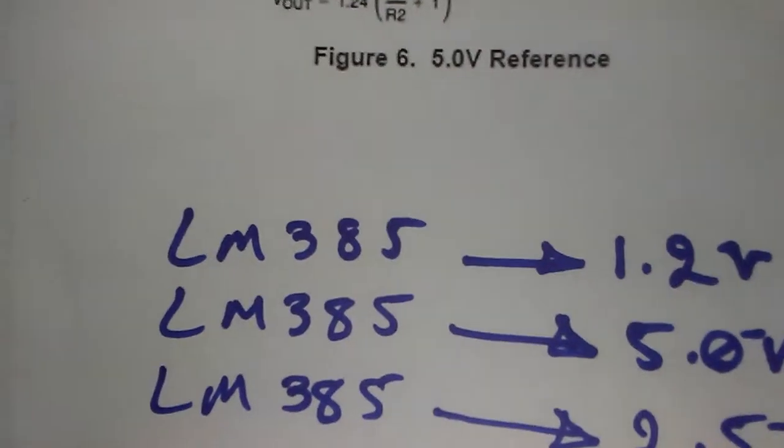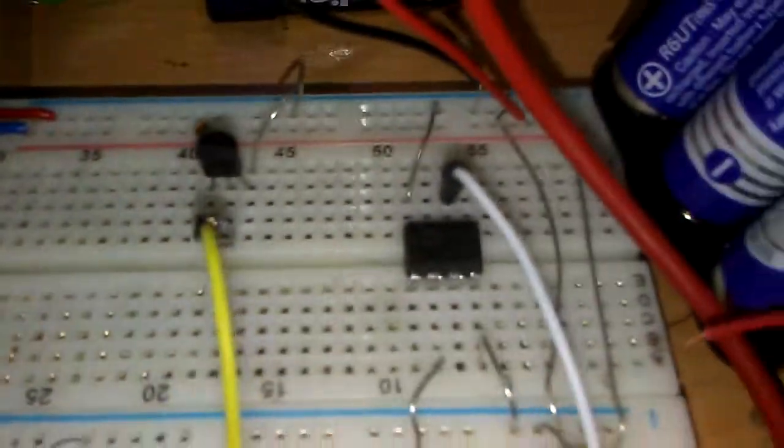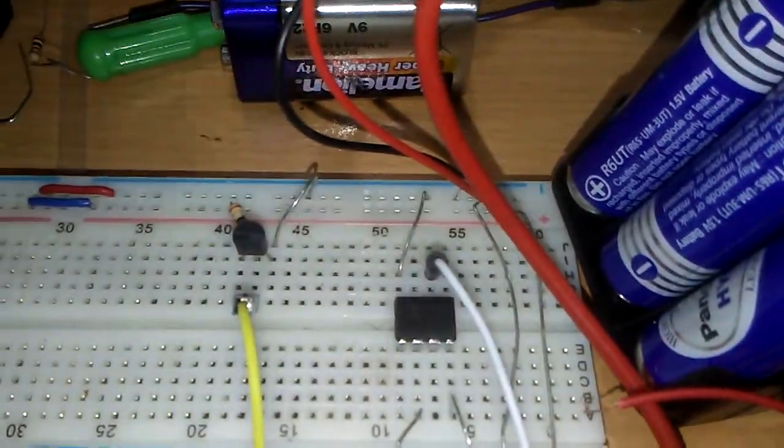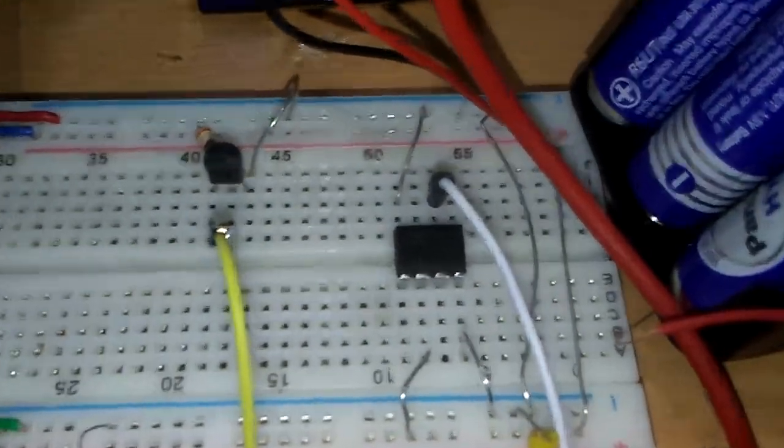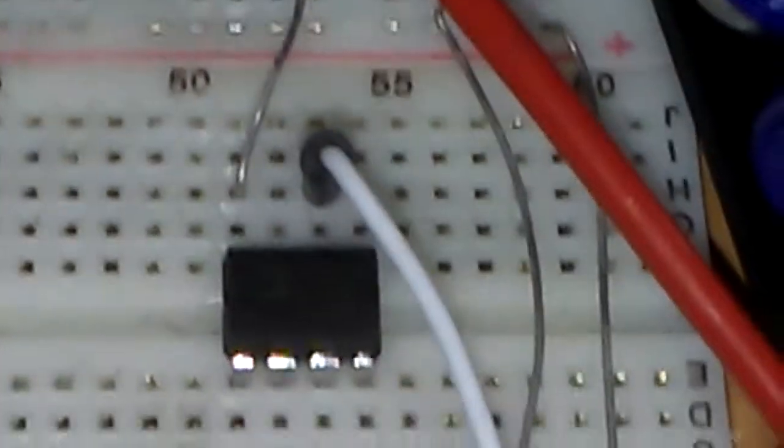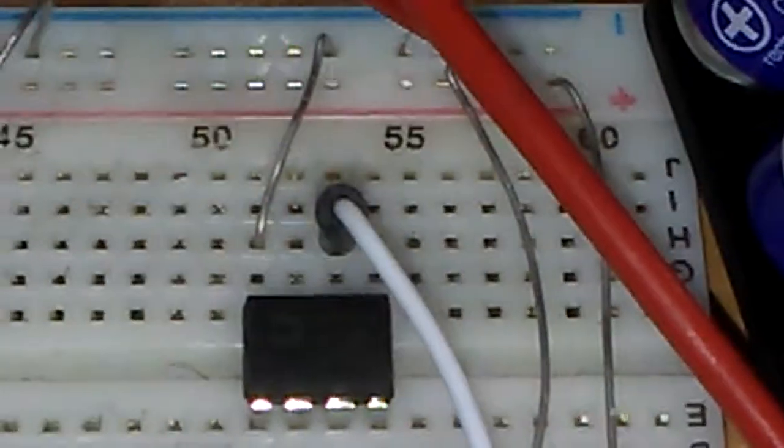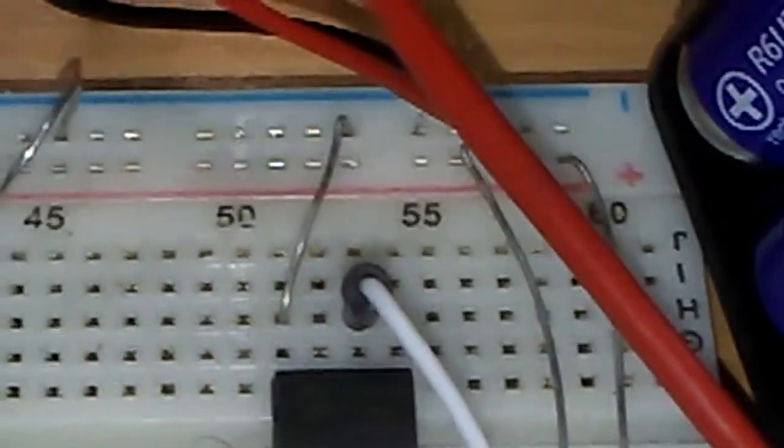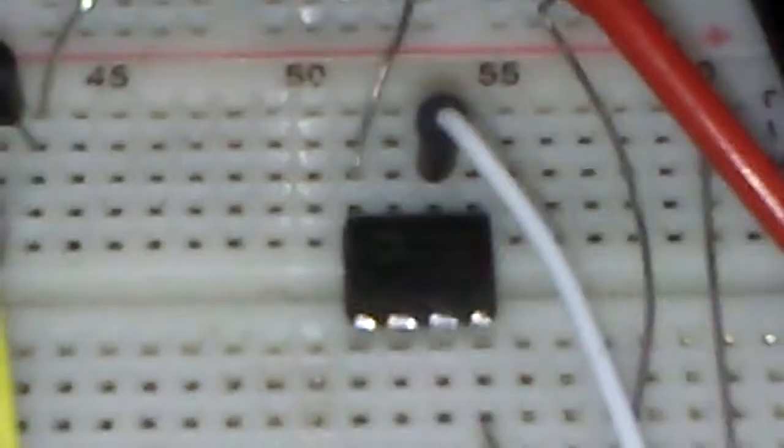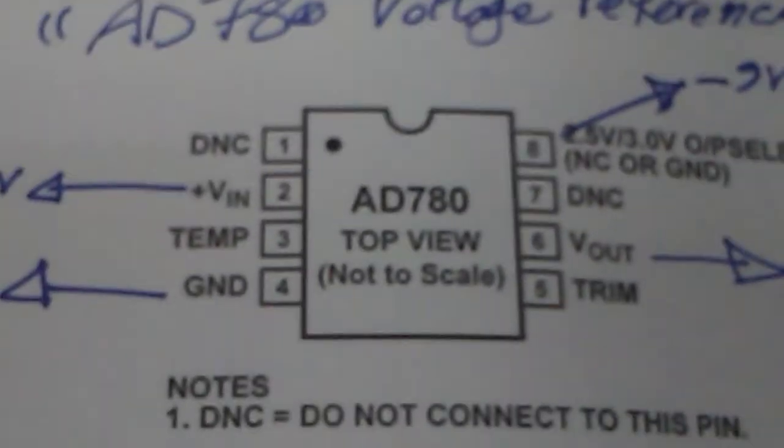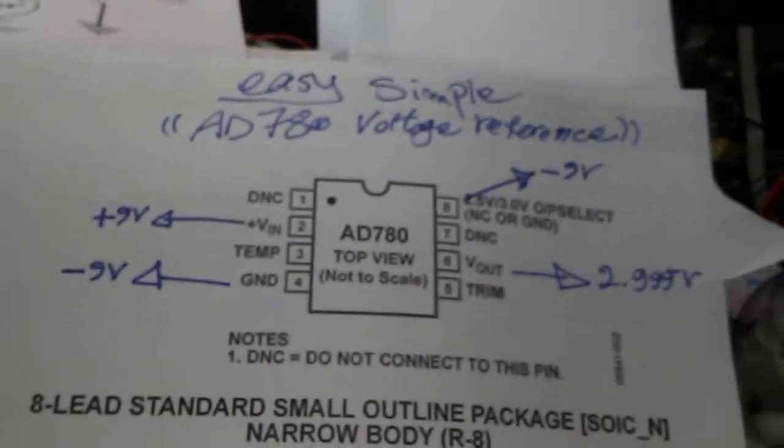The next one is this IC, one of the famous ICs that will make 2.5 and 3 volt reference voltage. It's AD780. This is really one of the best ICs and is very simple to program. You can see by the three wires we are able to make exactly the voltage.